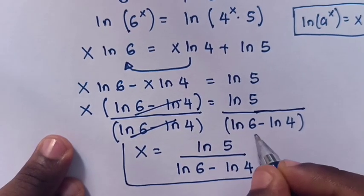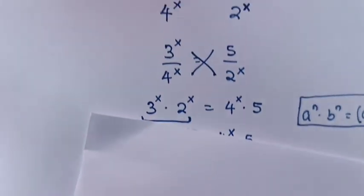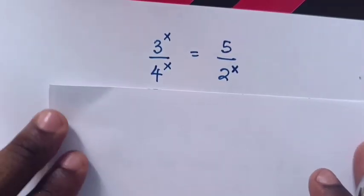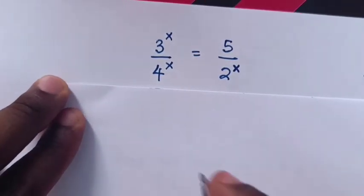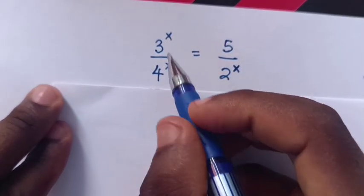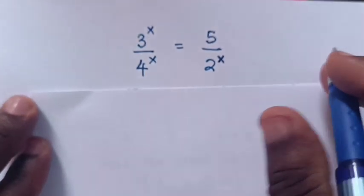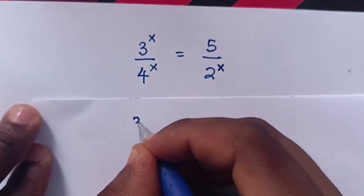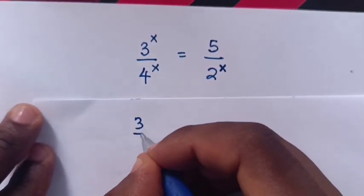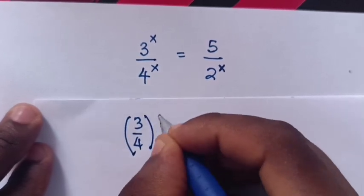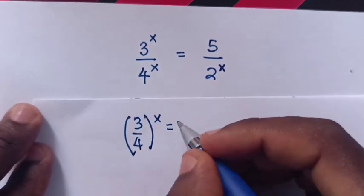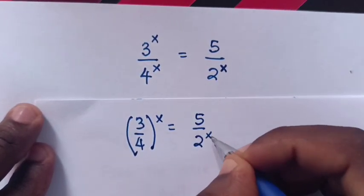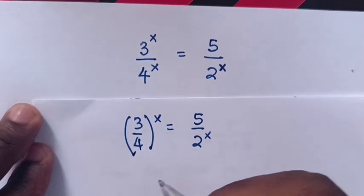So x is equal to ln(5) over (ln(6) minus ln(4)). This is the answer. Now let's try to solve using another method. From here, 3^x over 4^x — since x is common — it will be (3 over 4)^x is equal to 5 over 2^x.